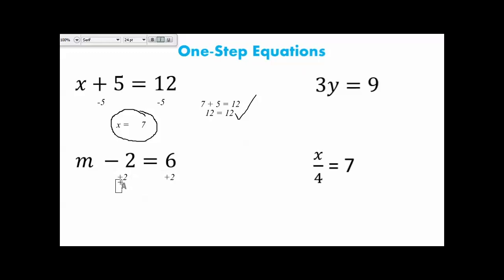Whatever you do to one side of the equation, you have to do to the other, and this leaves me with m equals 6 plus 2, which is 8. I could plug my 8 back in: 8 minus 2 is 6. That is a true statement. Therefore, the correct answer is 8.